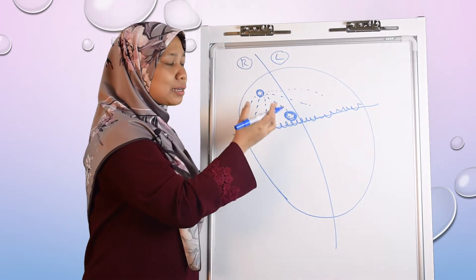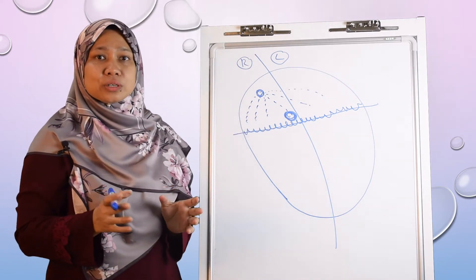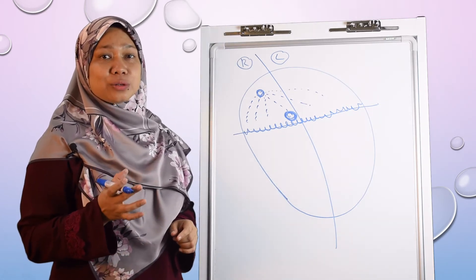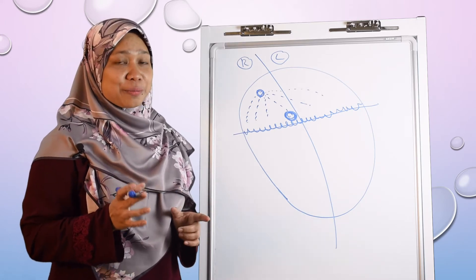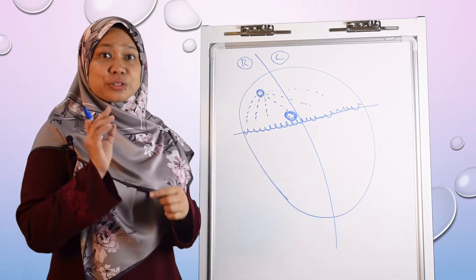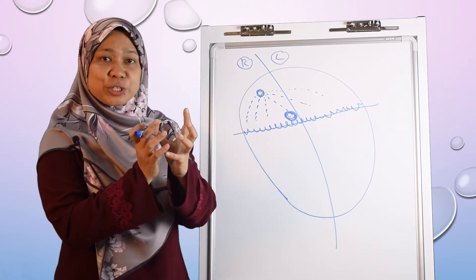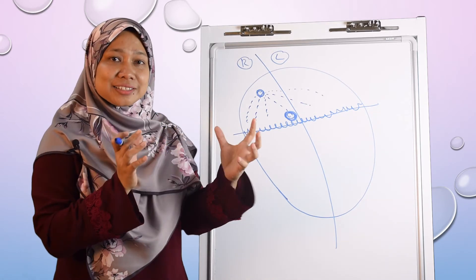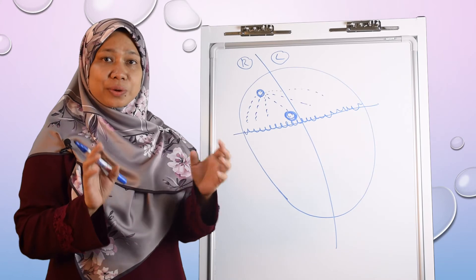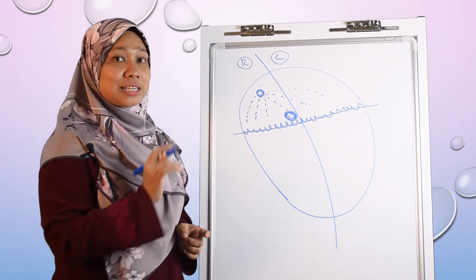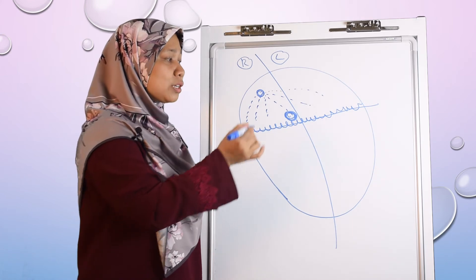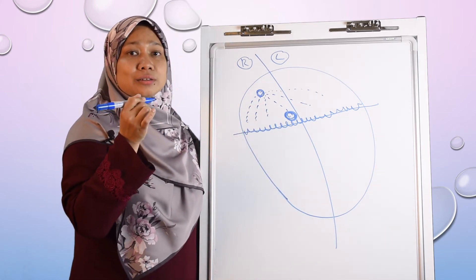The AV node waits for the atrium to contract, and after a few milliseconds it passes the impulse to the specialized conduction pathway. This is important because the ventricle needs time to be filled with blood. During ventricular contraction, all blood is squeezed from the ventricle. Then during ventricular relaxation, a vacuum is created inside the ventricle, which pulls blood from the atria into the ventricles. The AV node controls the impulse passed down to the ventricles and governs ventricular contraction timing.